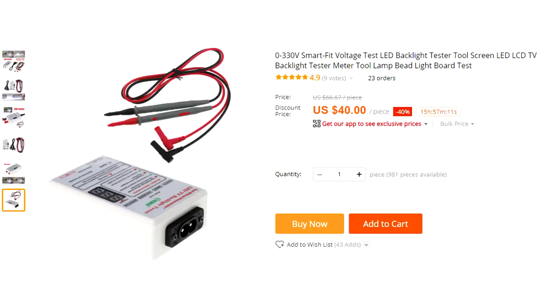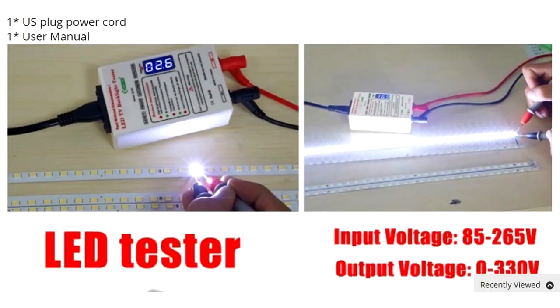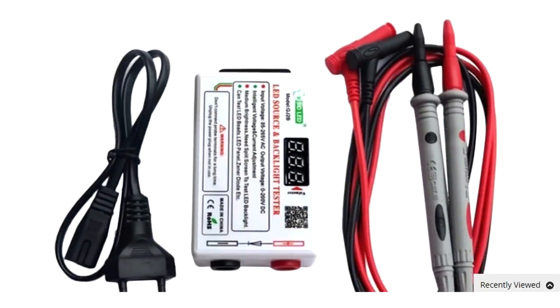Chinese devices are sold specifically for this purpose. Such devices provide high output voltage and low current, which allows you to find a faulty LED in a line in a couple of seconds. But these devices aren't cheap.